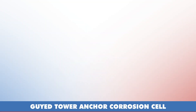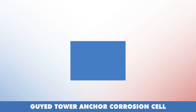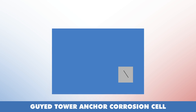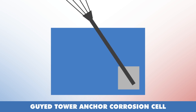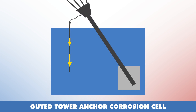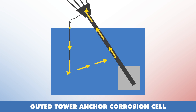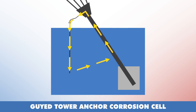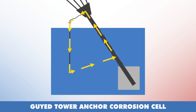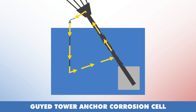Unfortunately, a guide tower anchor is a great example of a corrosion cell. The steel anchor shaft is the anode, and the copper grounding is the cathode. The anchor shaft is electrically connected to the grounding. The anchor and grounding are buried in the soil, which acts as the electrolyte.